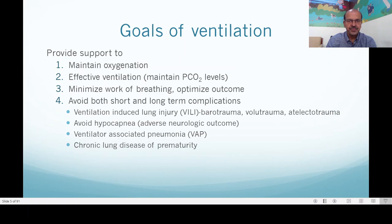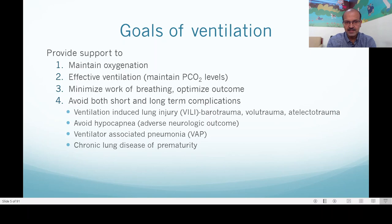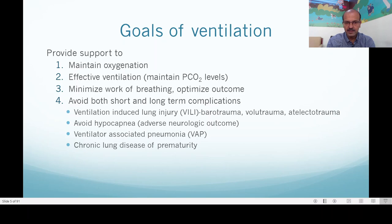Why do we need ventilation? We need ventilation in type 1 or type 2 respiratory failure to maintain oxygenation and maintain effective ventilation in the form of carbon dioxide levels in the blood. We have to minimize the work of breathing and help to optimize the outcome, while avoiding short and long term complications. Complications may include ventilation-induced lung injury such as barotrauma, volutrauma, and atelectrauma. We have to avoid hypocapnia from overventilation, as this can have adverse neurologic outcomes especially in premature babies. We must also avoid infections like ventilator-associated pneumonia, and chronic lung disease of prematurity is a long term complication as well.